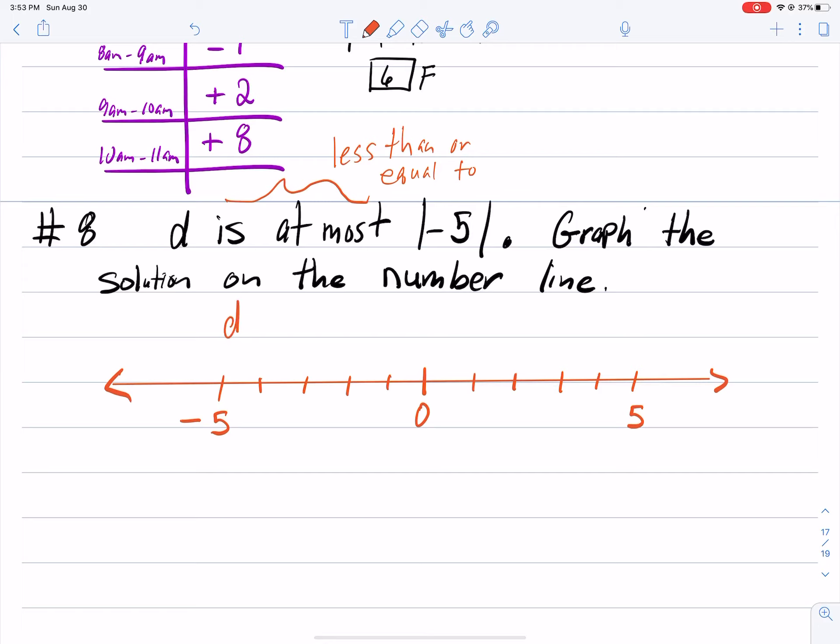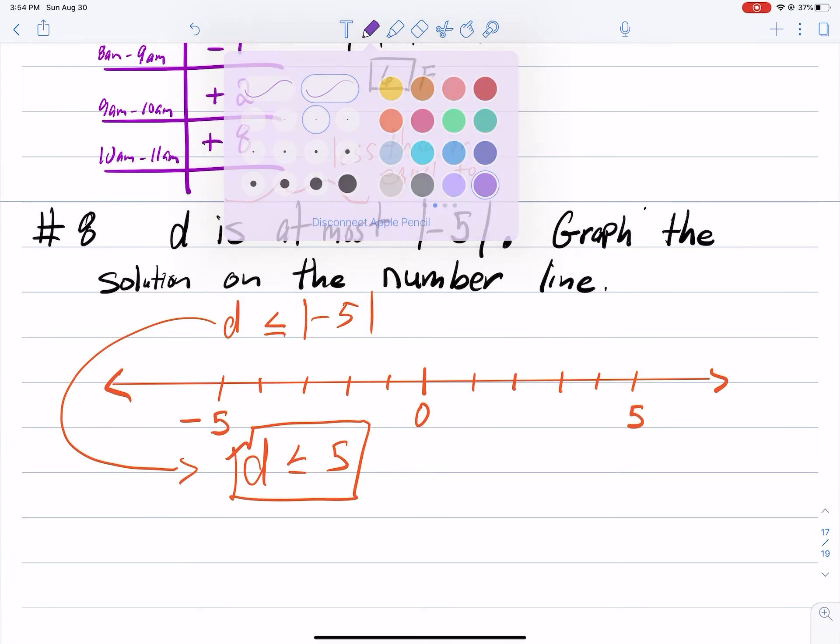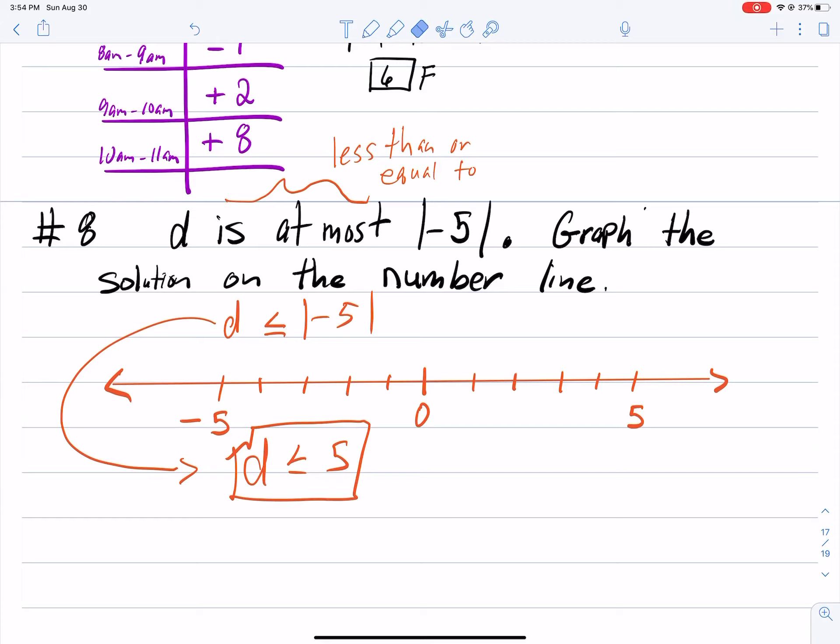Alright, less than or equal to. So when I write this it would be D is less than or equal to the absolute value of negative 5, which we know is 5. And so that is the solution. And the way you plot this on the number line is you take positive 5 which is here. Positive 5 which is here, and D is less than or equal to, to the left.